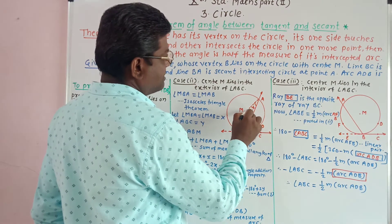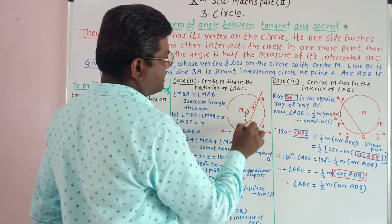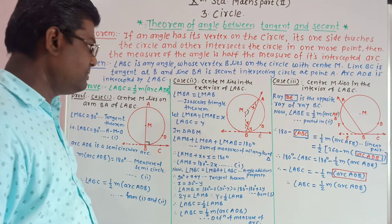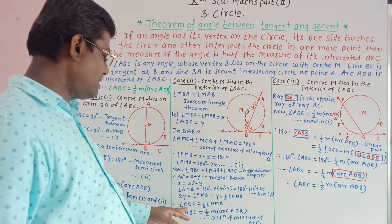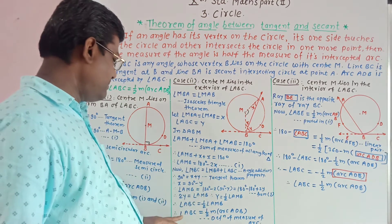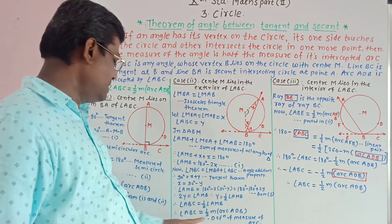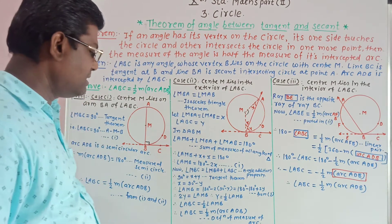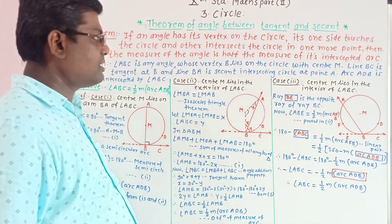Since y = 1/2 × angle AMB, and angle AMB equals the major of arc ADB (the central angle equals the arc measure), therefore angle ABC = 1/2 × major of arc ADB. This completes Case 2.